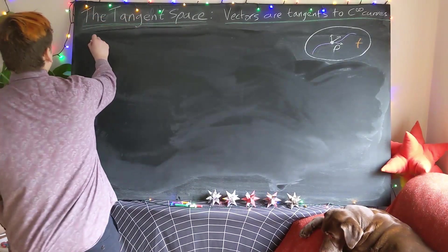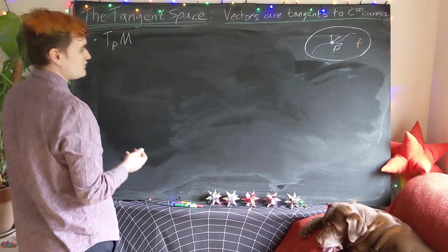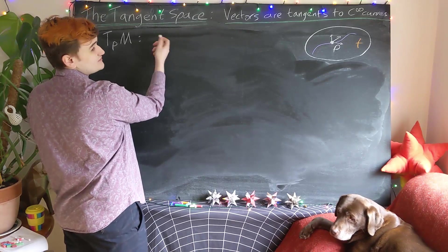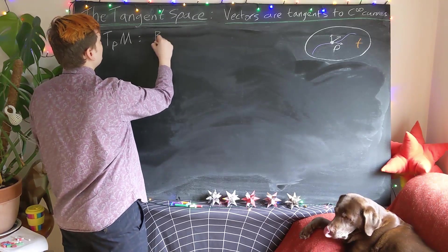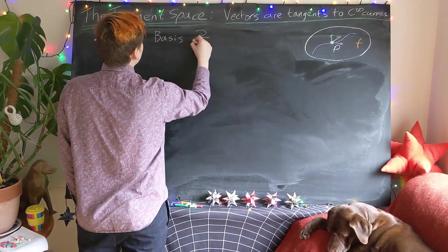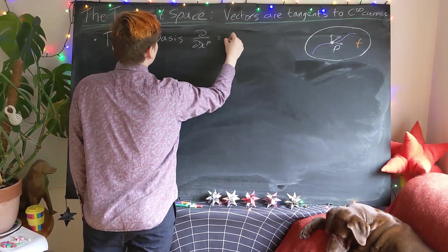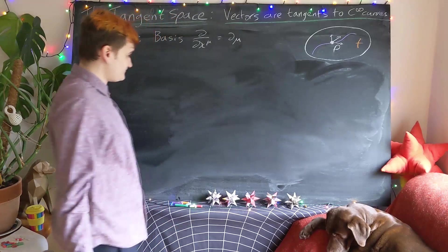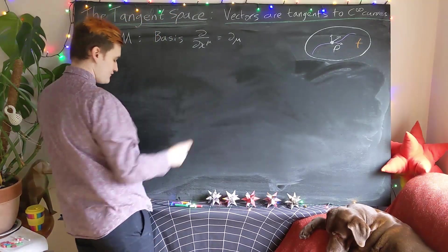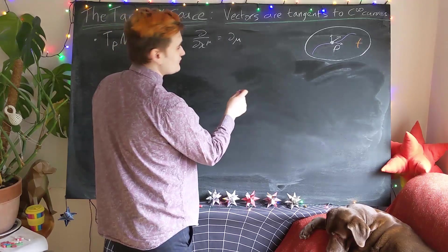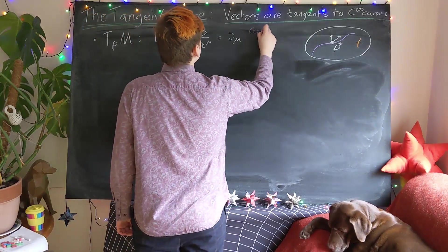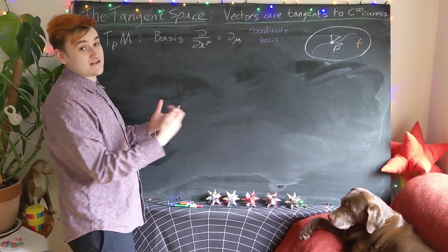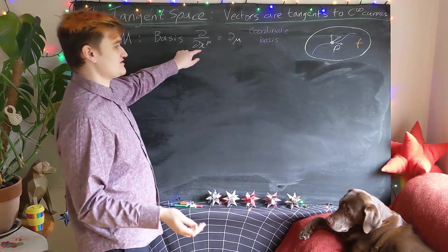So we have our tangent space, and we know that this is a vector space which is spanned by our basis vectors d by dx mu, which I'm just going to be calling d lowercase mu for shorthand. So now we often refer to this as the coordinate basis for obvious reasons, because it essentially gives us a realization of the vector in a particular coordinate system.